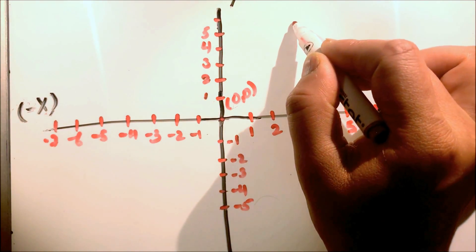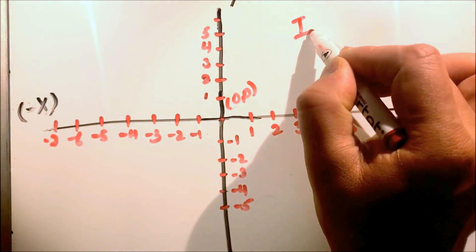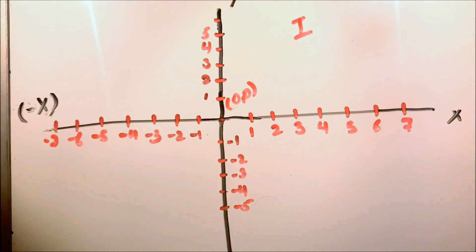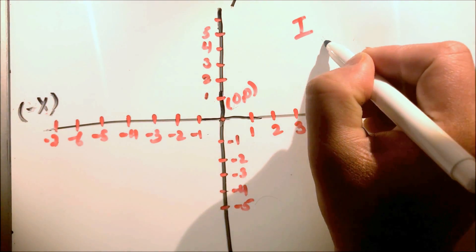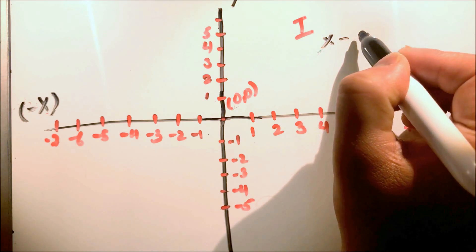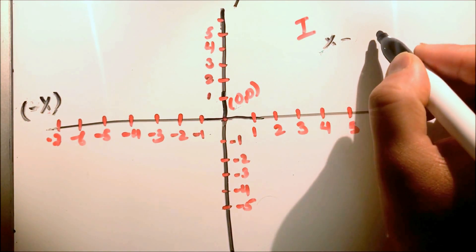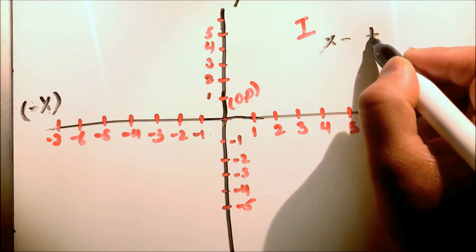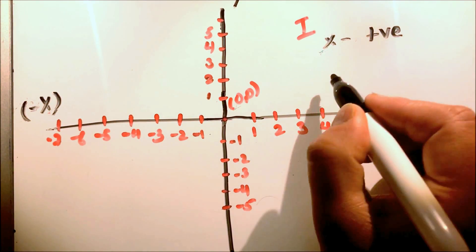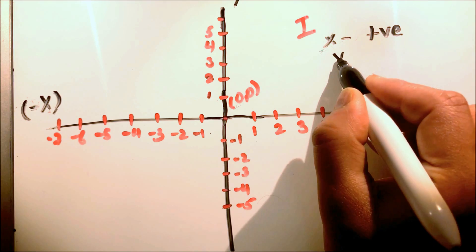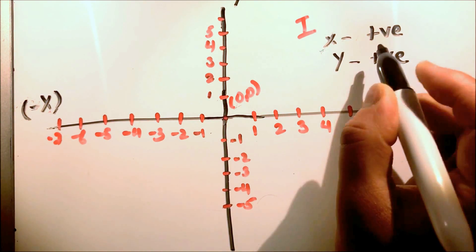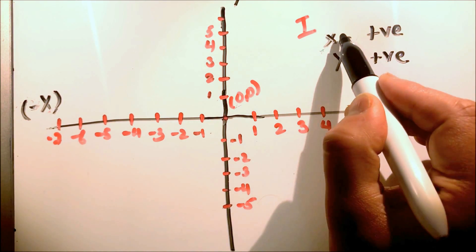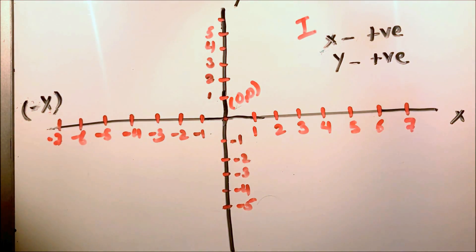This is called the first quadrant. In the first quadrant, x is positive and y is positive. So both x and y are positive in the first quadrant.